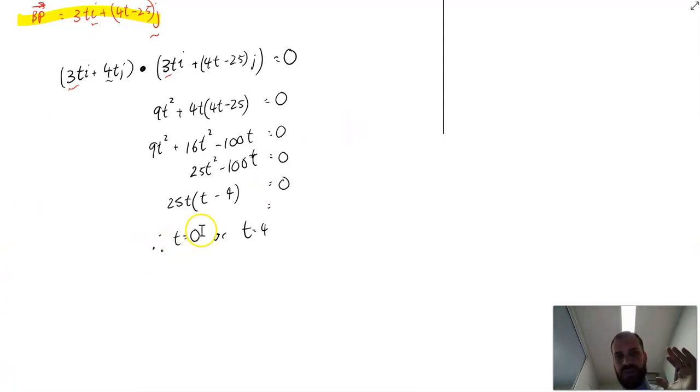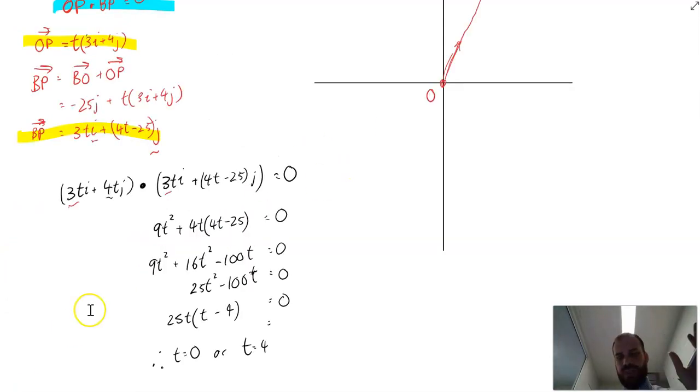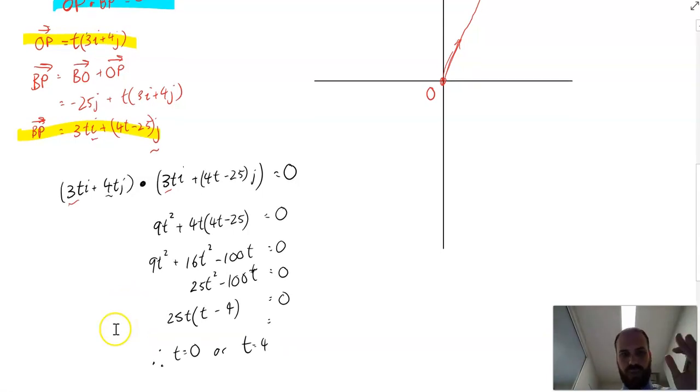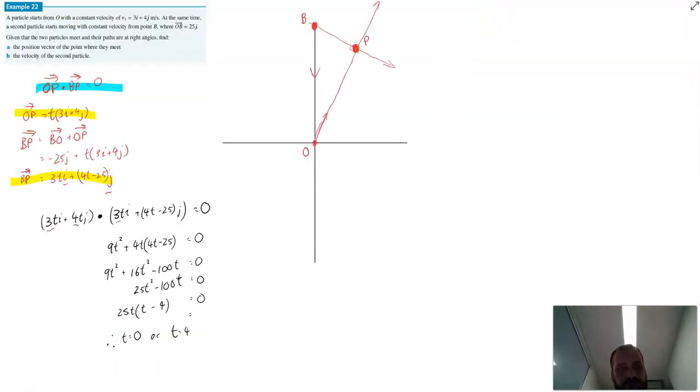So does T equals zero make sense? We've been told that the particles don't meet at time zero. They're somewhere else at time zero. So time zero must be out. The answer must be time 4. So we're trying to find the position vector of the point where they meet. So we can just put time 4 into either of these should work. But let's put it into the top one there.